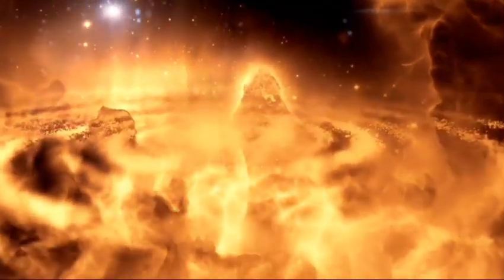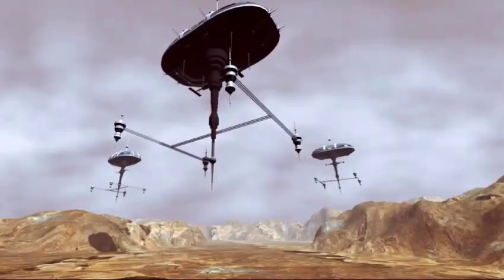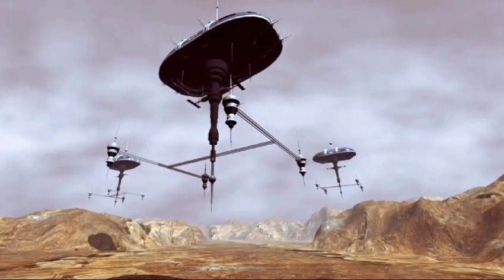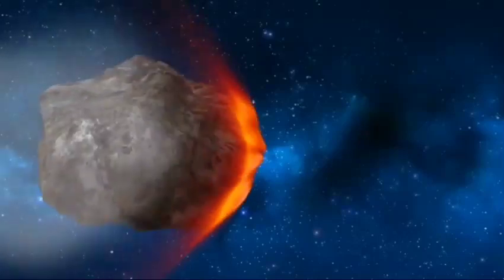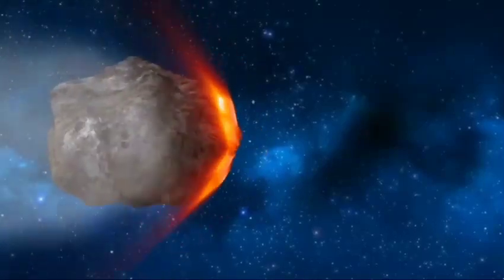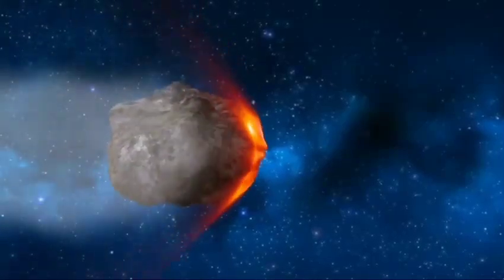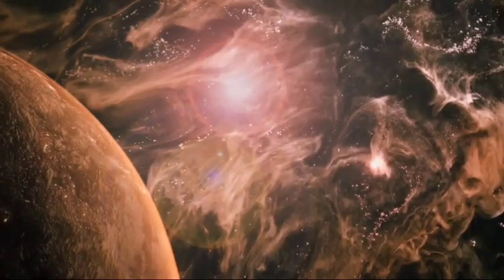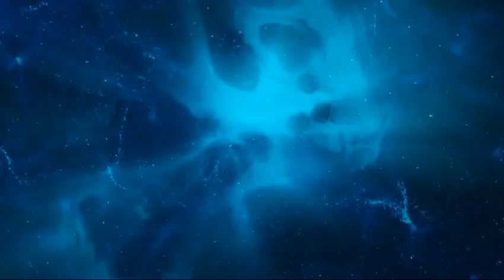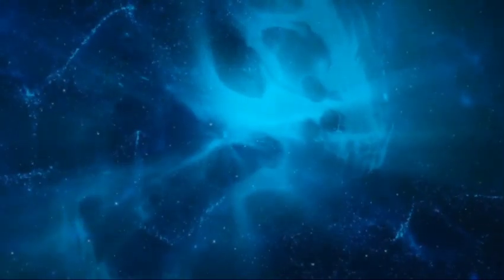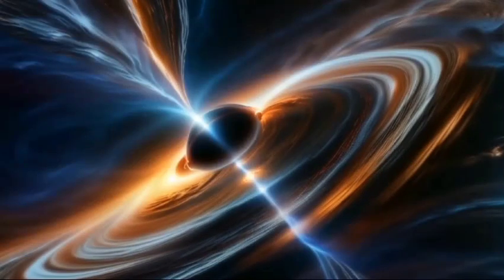Pluto's journey around the Sun is marked by unique qualities. Its orbit takes an extraordinary 248 years to complete, and since its discovery in 1930, Pluto has yet to finish a full revolution. Adding to its intrigue is the highly elliptical shape of its orbit, a departure from the nearly circular orbits of major planets. Furthermore, Pluto's orbit is tilted at 17 degrees to the ecliptic plane.